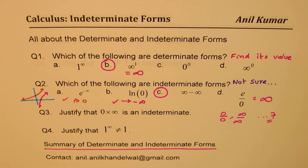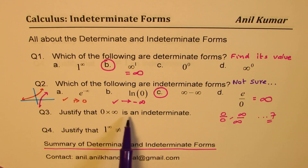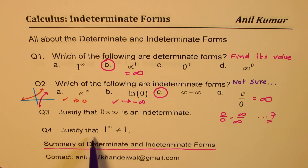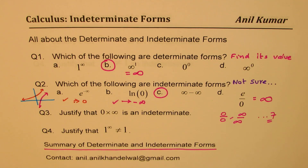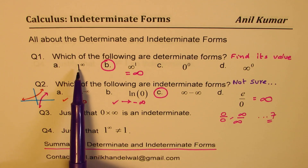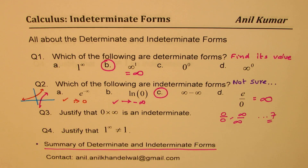Now we have two other questions for you. You need to justify why 0 times infinity is an indeterminate, and you need to justify that 1 to the power of infinity is not equal to 1. These are very important questions. I'd like you to pause the video, answer these questions, and then look into my suggestions. Once we understand all this, we'll summarize all our learnings.